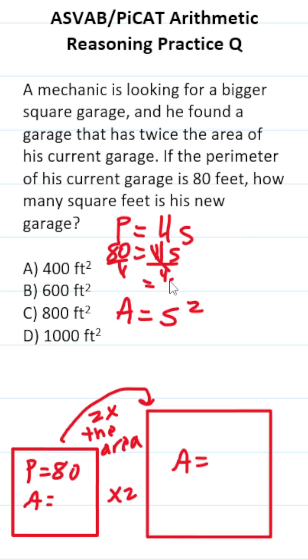This crosses out, leaving us with S over here. 80 divided by 4 is 20. Now that we know what S is, we can plug it in right here. This becomes 20 squared. 20 squared is the same thing as 20 times 20 or 400. So his current garage has an area of 400 square feet.